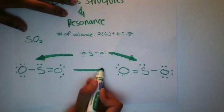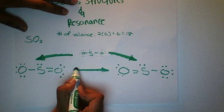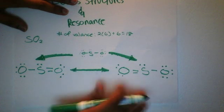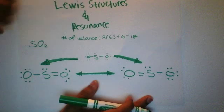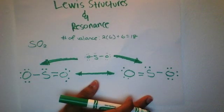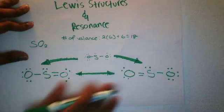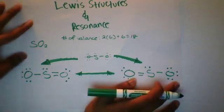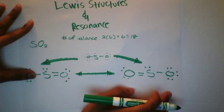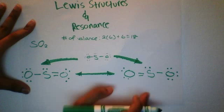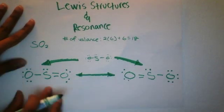And what that basically means is that, let's say we have a canister of sulfur dioxide. It's a gas. At any given moment, we have a sulfur dioxide that looks like this, and we have a sulfur dioxide that looks like this. And that's what basically resonance structures mean. At any given moment, sulfur dioxide can exist as this form, or it can exist as this form.